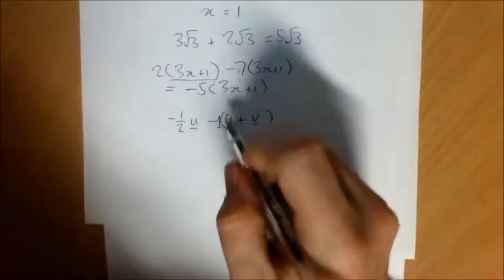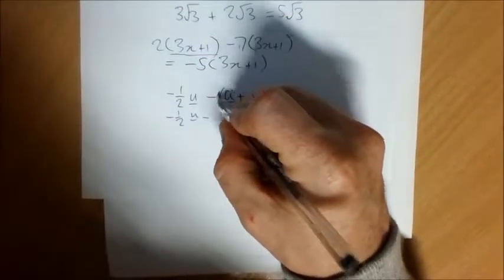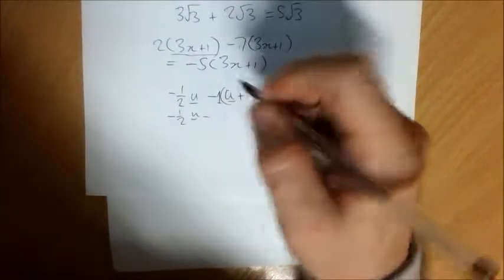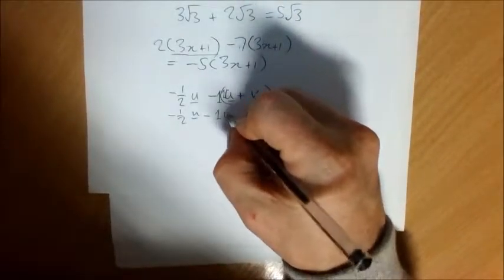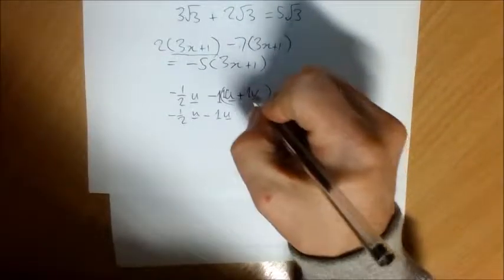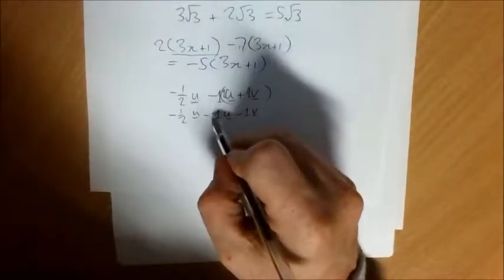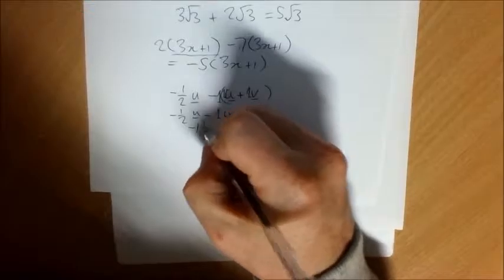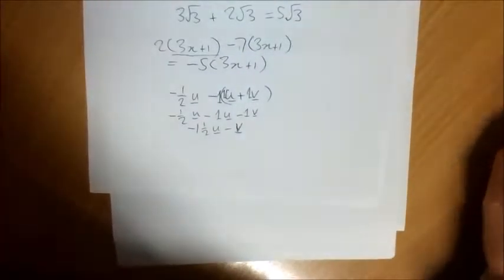Well, imagine there's a one there, multiply out the bracket, just copy this part. So negative one times u, you can imagine there's one there as well, negative one times one is negative one. Imagine there's a one there, negative one times one is negative one. You've got negative half of something, take away one of it, you're down to negative one and a half of it. So that's your answer there.